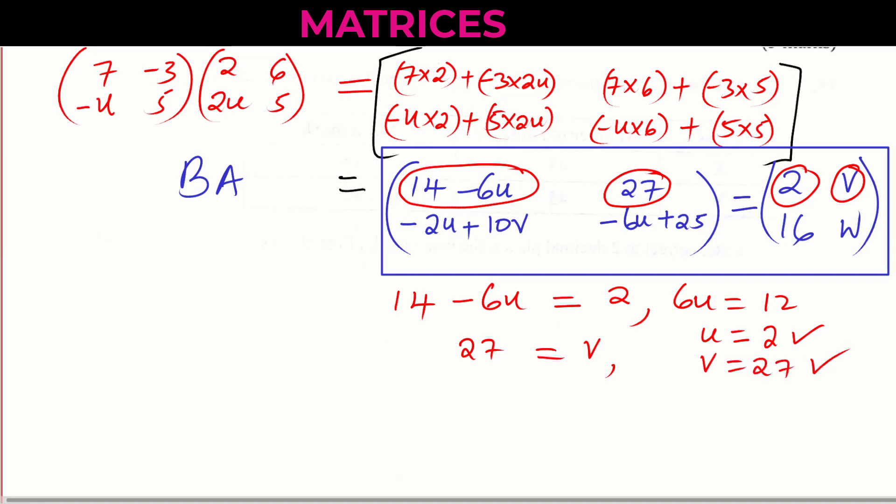Then for W, W is here. So that one matches with this value here. So negative 6U plus 25 is equal to W. And since we have U as 2, here you get negative 6 times 2, you get negative 12 plus 25 is equal to W. So therefore, W will be given by negative 12 plus 25, that will be 13.